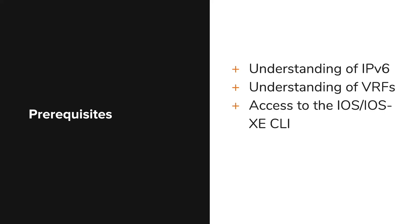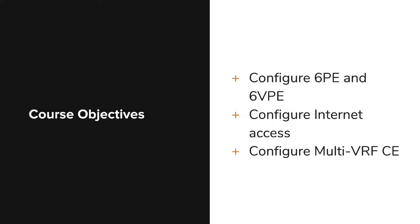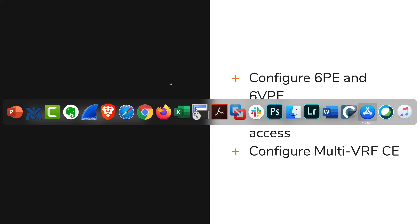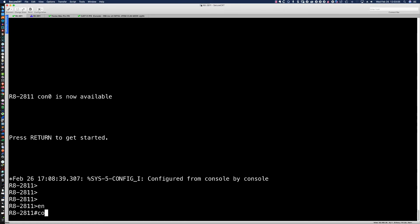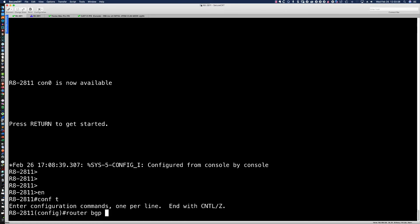We also have a number of learning objectives relating to this course. The first is that you're going to be configuring 6PE and 6VPE. You're going to be configuring internet access and gaining an understanding of what internet access means in an MPLS context. Then you're going to be configuring Multi-VRF CE, and we're even going to look at some of the semantics around what happens when we're using OSPF. When it comes to achieving your certification and career goals and functioning in a real-world enterprise or service provider network, it is critical to understand that there is no substitution for deliberate hands-on practice activities.